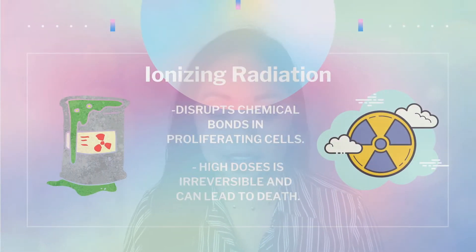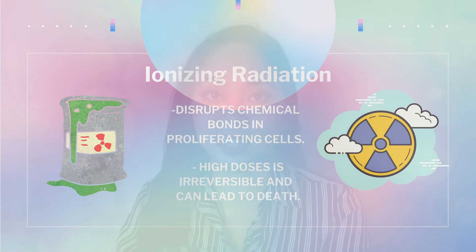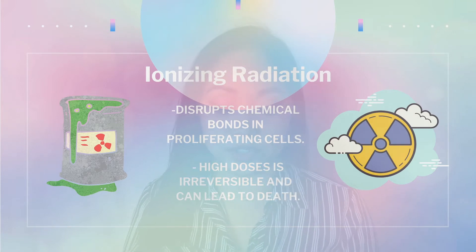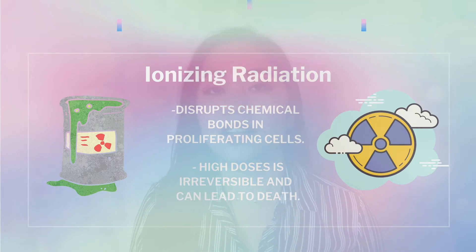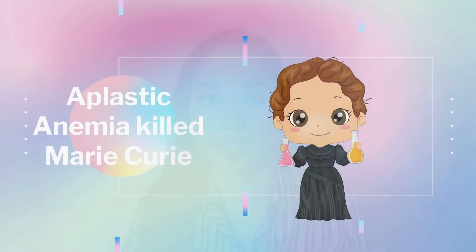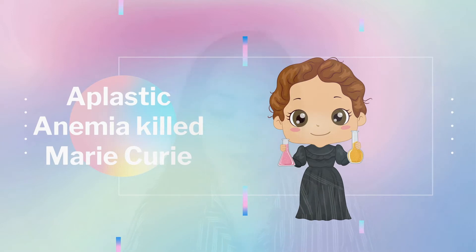Another reason for secondary acquired aplastic anemia is ionizing radiation, which disrupts chemical bonds in rapidly proliferating cells, leading to anemia, leukopenia, and thrombocytopenia. At high doses of 300 to 500 rads, there is complete loss of hematopoietic cells, which is irreversible and lethal.